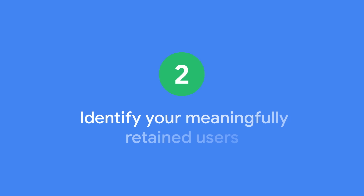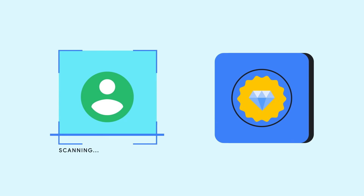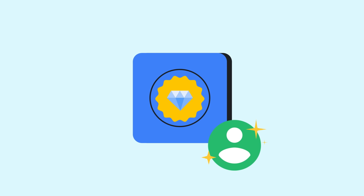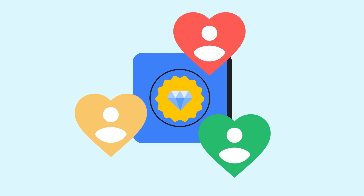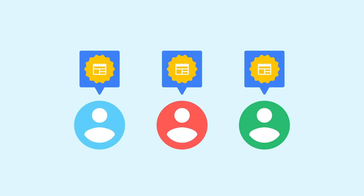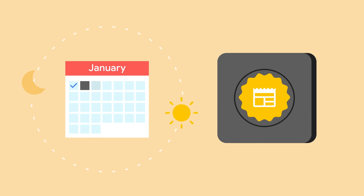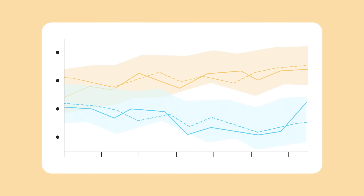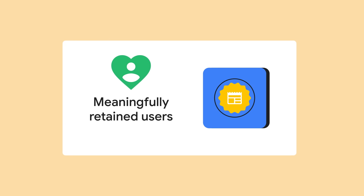Step number two: identify your meaningfully retained users. Key to improving retention is understanding the behavior of the users who return to the core action that delivers your app's value. These are your meaningfully retained users who will return again and again. To identify these users, you need to know your app's core action and natural rhythm. If you're unsure what your core action is, consider user testing or a survey. Your app's natural rhythm is how often users are motivated to return. If you don't have enough data, look at the peer benchmarking in the Play Console. Use this information to create a helpful definition of meaningfully retained users and the metrics you need to track them.